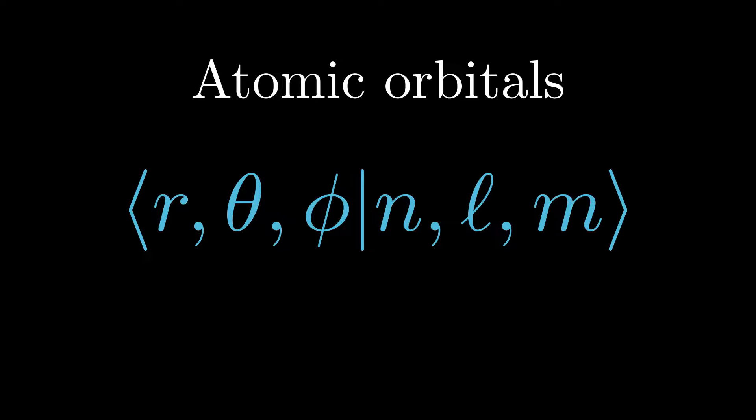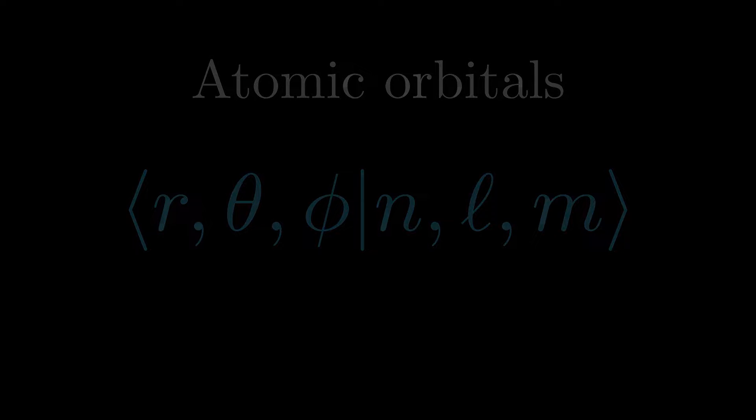The atomic orbitals we'll calculate today are not only important for experiments with hydrogen atom or one electron ion, but also important as a building block for many electron atoms and provides a basis to understand the structure of the periodic table.